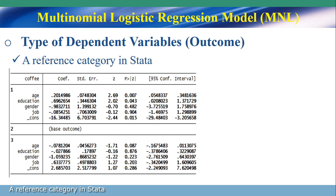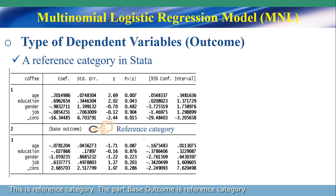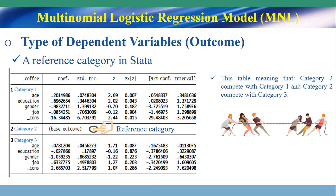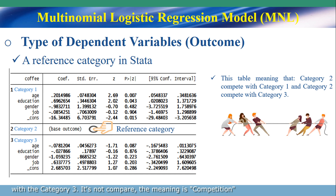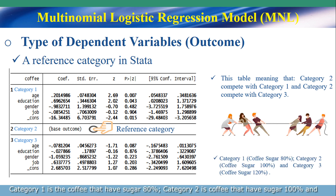A reference category in Stata. This table I take from the Stata analysis that I mentioned. This is the reference category. Number 1 is category 1, number 2 is category 2, and number 3 is category 3. This table means that category 2 competes with category 1, and category 2 competes with category 3. It is not compared — the meaning is competition. Category 1 is the coffee with sugar 80%, and category 2 is the coffee with sugar 100%.